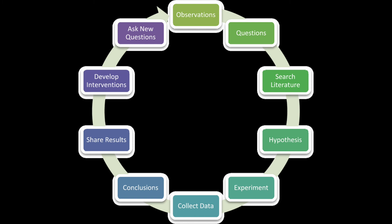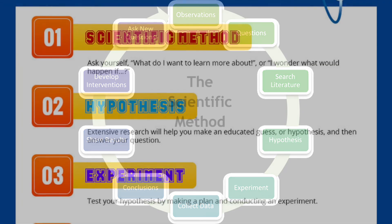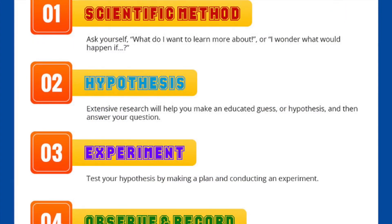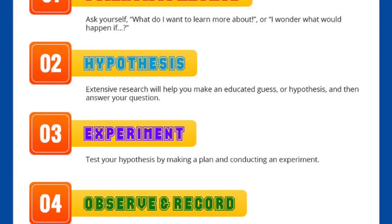Scientists try their best to make sure that their methods and processes are as objective and unbiased as possible. The scientific process can also be seen as a scientific method.